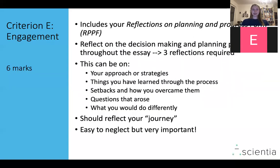Criterion E is Engagement, worth six marks — this is essentially your reflection throughout the process. It includes your reflections on the Planning and Progress Form, the RPPF, in which you reflect on the decision-making and planning process throughout the essay. Three reflections are required, covering your approach or strategies, things you've learned through the process, any setbacks and how you overcame them, any questions that arose, and what you would do differently next time. This is a criterion that's easy to neglect, but it's worth six marks, so make sure you're paying attention to it.